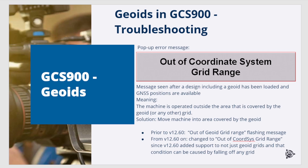Please note that prior to version 1260, the message looked slightly different — it was an out of GeoEat grid range flashing message. From version 1260 on, it has been changed to out of coordinate system grid range, since 1260 added support for not just GeoEat grids but also other grids, and that condition can be caused by falling off any grid.